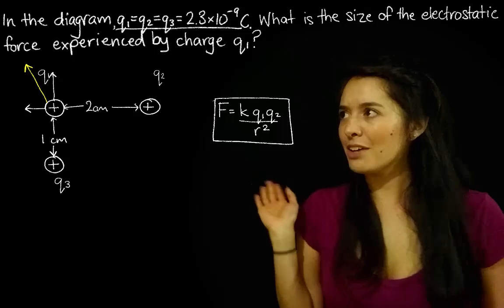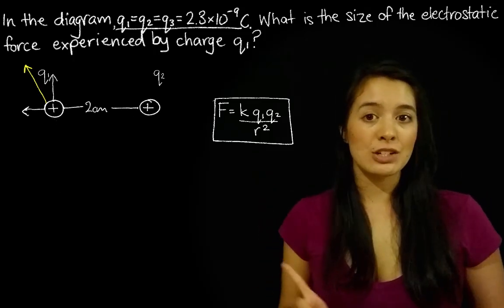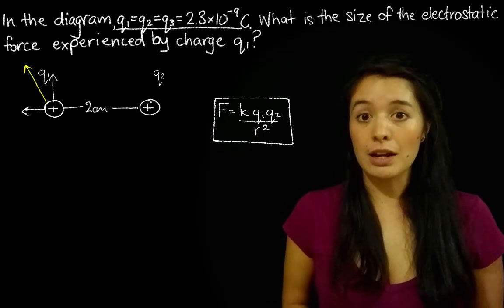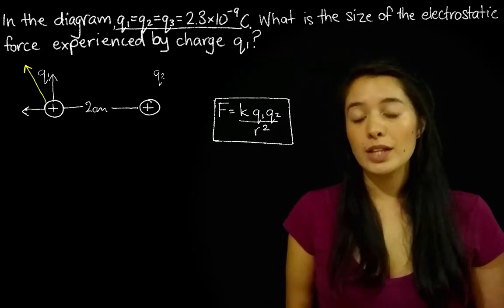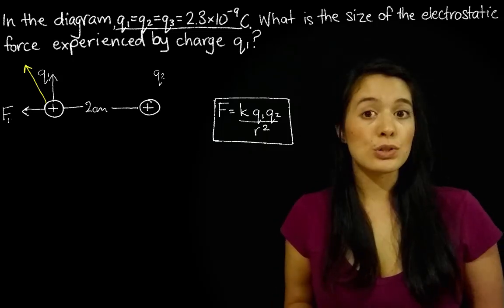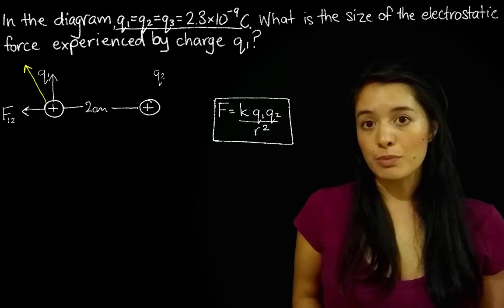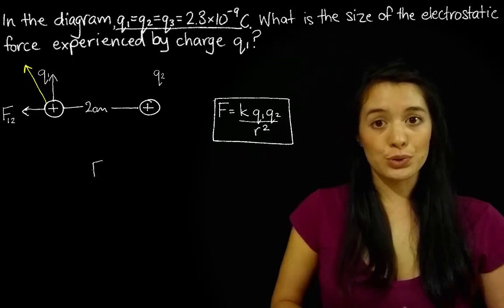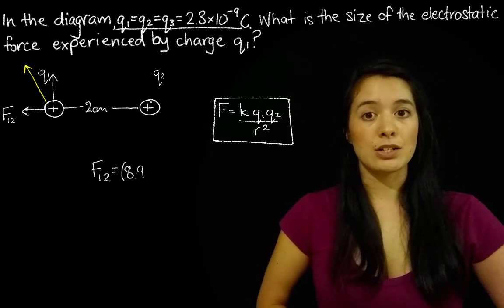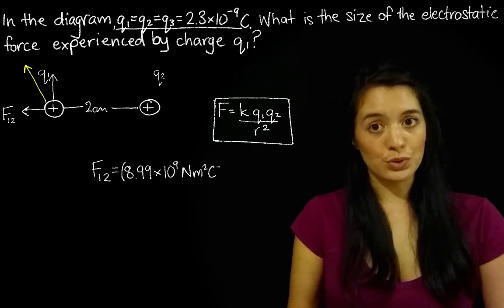So let's get rid of Q3 again. And we'll be left with Q1 and Q2. And this is easy, right? We've done this. We just have to plug the numbers into Coulomb's Law. So let's call the force between Q1 and Q2, F12, just to keep things clear. So plugging in the numbers to Coulomb's Law, we'll get F12 is equal to K, which is 8.99 times 10 to the 9 newton meters squared coulombs to the negative 2.